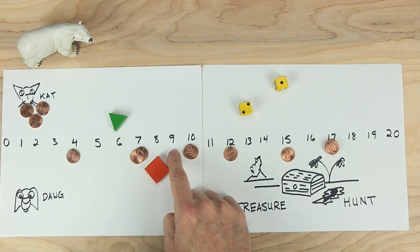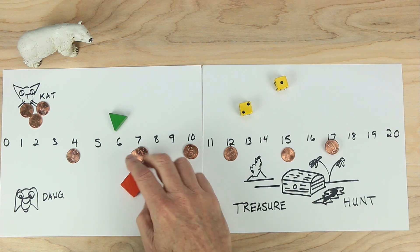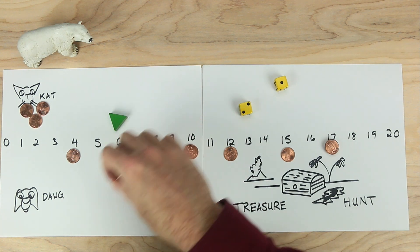But what if dog moves just one forward and then two back? One forward, one, two back. And where does dog end up? On the number seven. Collects the treasure.